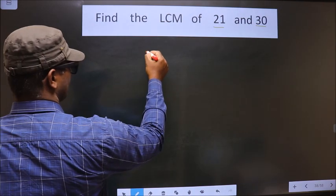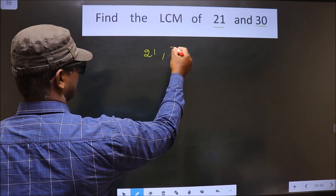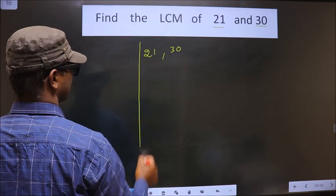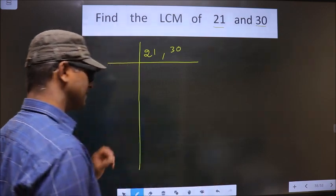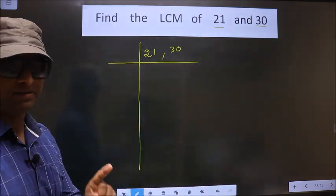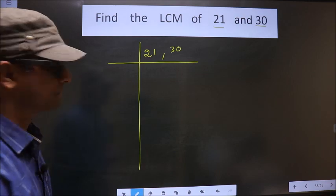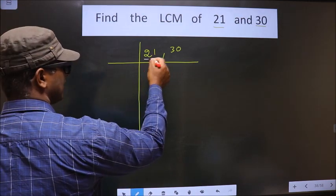See, 21, 30. This is your step 1. Next, here we have 21.